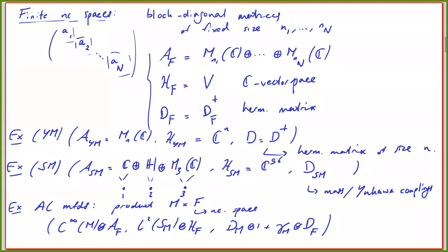The combination you're after — if you want to describe gauge fields on a manifold background — is what one gets from these AC manifolds. AC stands for almost commutative, but it's also a tribute to Alain Connes. That's the set of examples I would like to keep in mind. The non-commutativity here is rather mild — it's like linear algebra with matrix products.